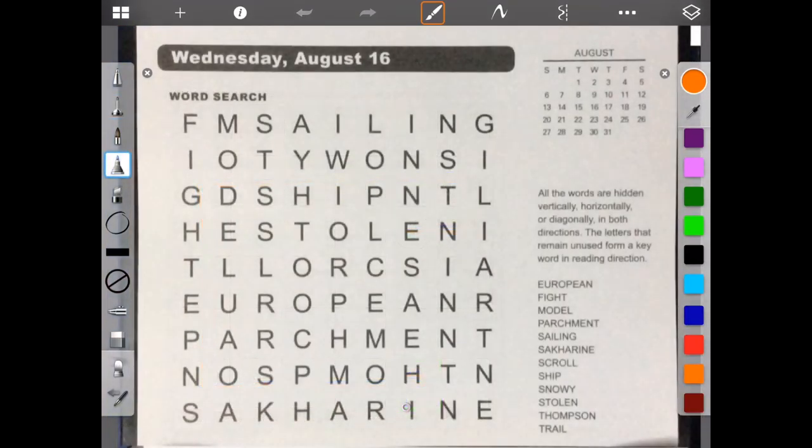Hello. Welcome to Brain Games Calendar 2017. We're in week 33, day three. We're up to word search. Let's begin. All the words are hidden vertically, horizontally, or diagonally in both directions. The letters that remain unused form a keyword in reading direction.